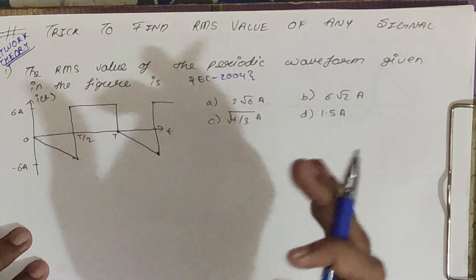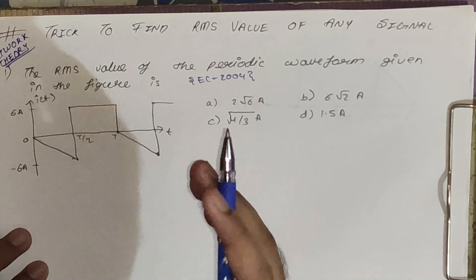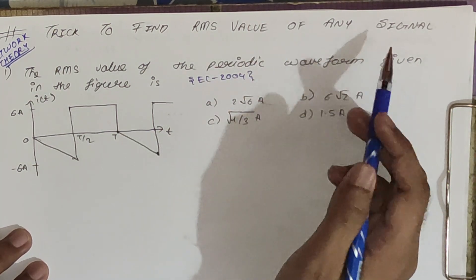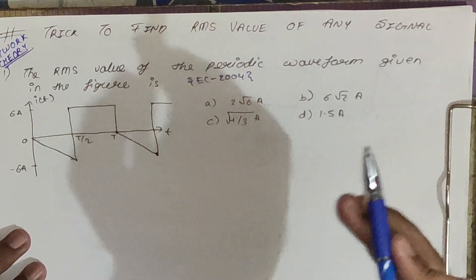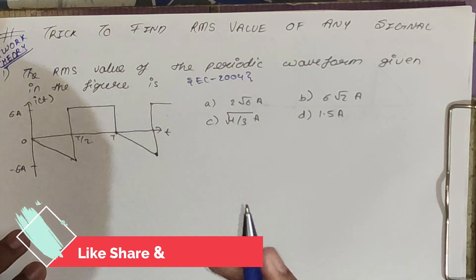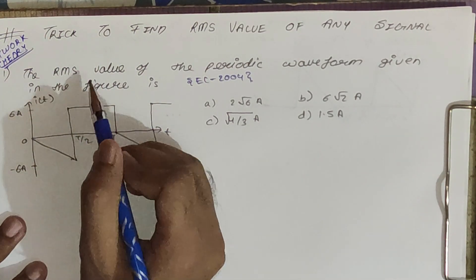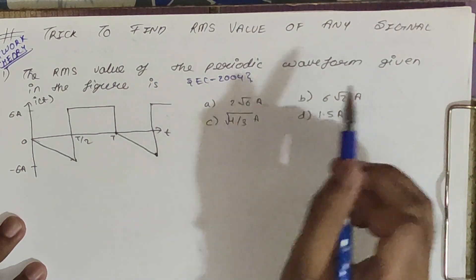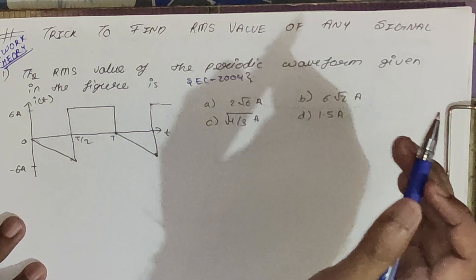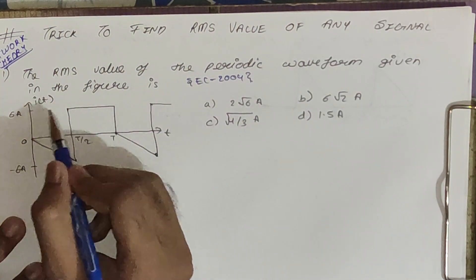Hello friends, welcome back to the GATE short trick series. Today in network theory, we are back with one more interesting trick to find the RMS value of any signal. This signal can be a voltage signal or a current signal. The first problem is to find the RMS value of a periodic waveform — this is question EC 2004 — and you can see the waveform given here is a current waveform.